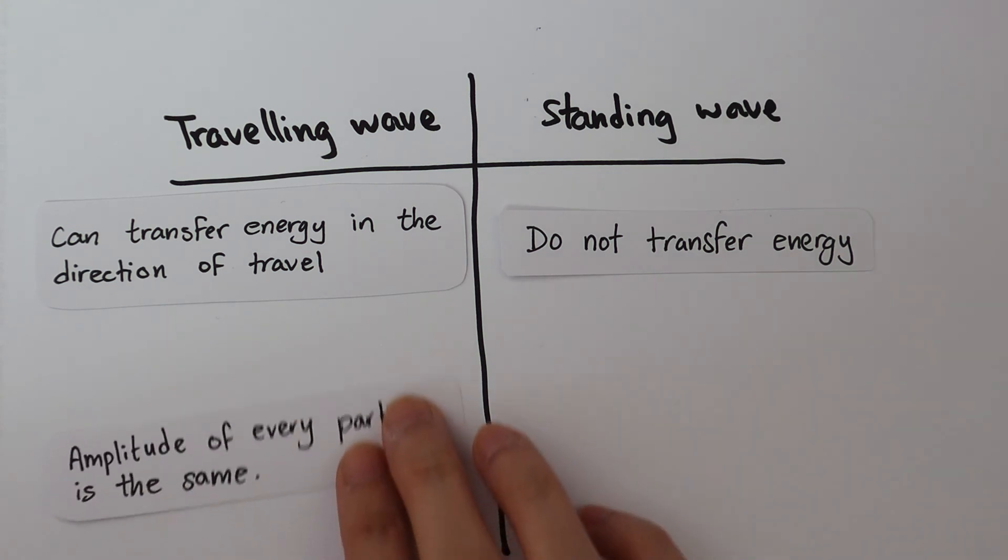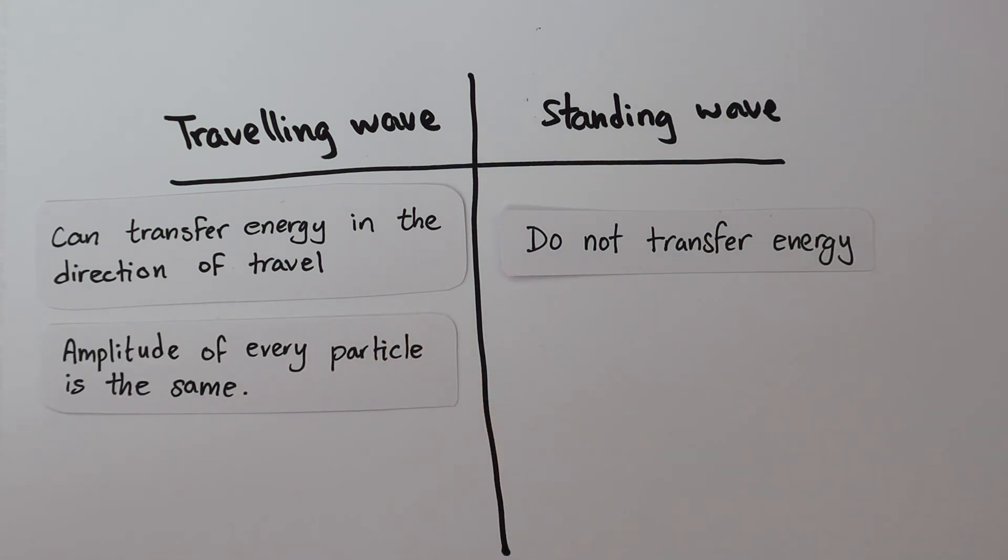The amplitude of every particle is the same in a traveling wave because each particle can take turn oscillating to the maximum displacement. But in a standing wave, every particle's amplitude is different.